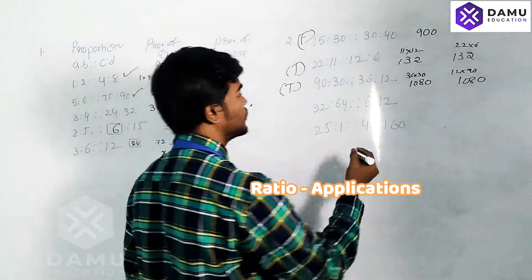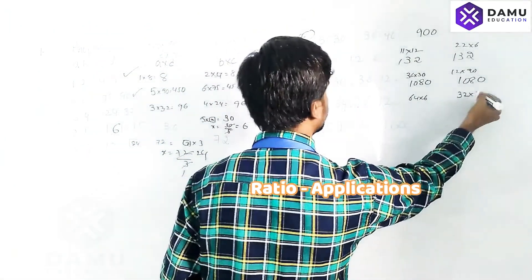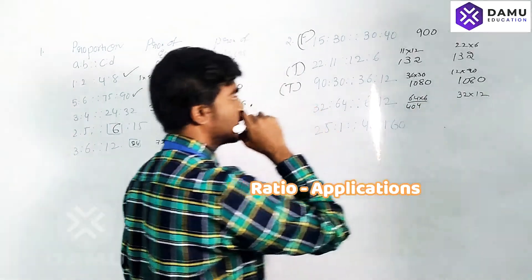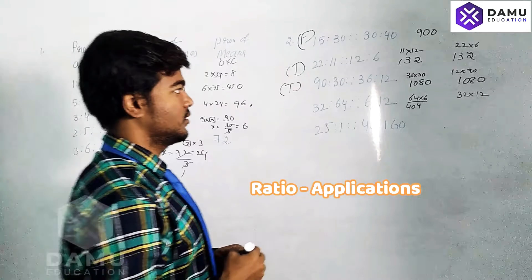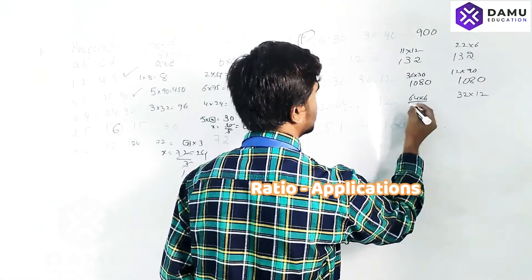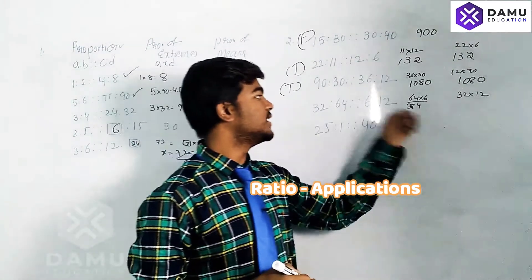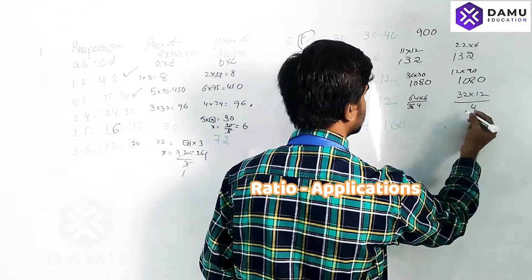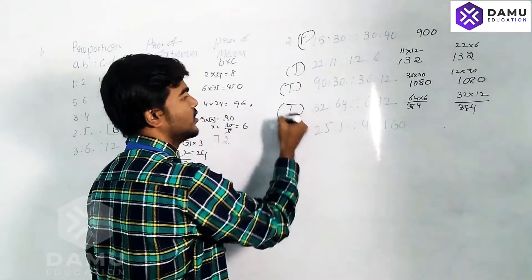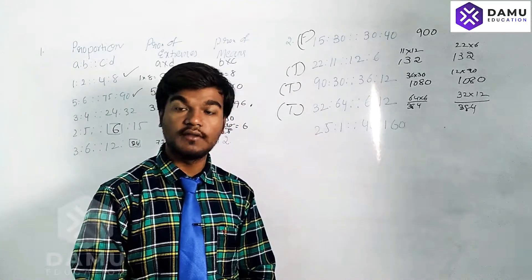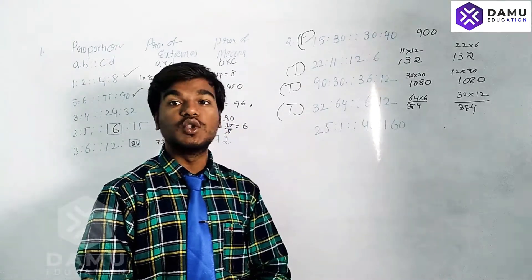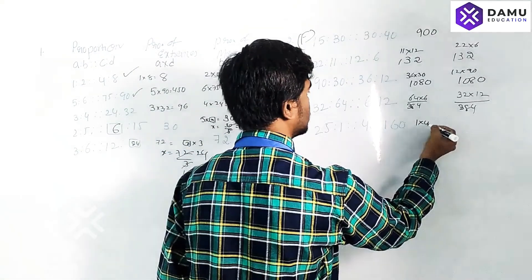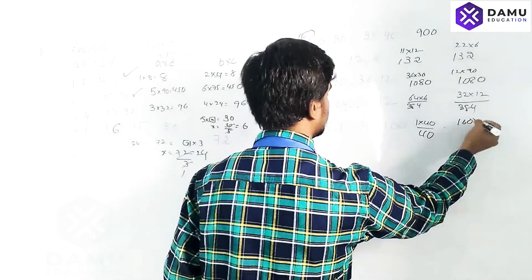Next: 64 × 6 = 384 and 32 × 12 = 384. Both are equal, so product of means equals product of extremes. We can say the given two ratios are in proportion: 32 is to 64 as 6 is to 12. This is true.